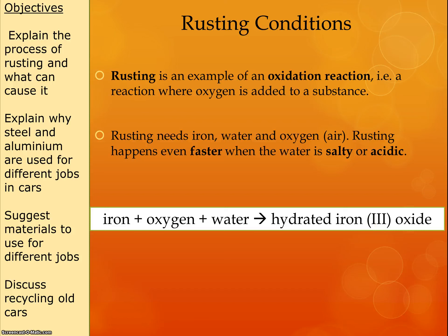Rusting requires iron, oxygen, and water, but it will happen faster if the water the iron is in is salty or if it's acidic. So acid rain can cause iron objects to rust faster than they would otherwise.